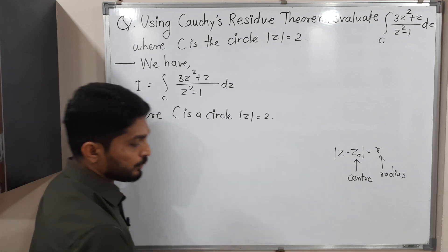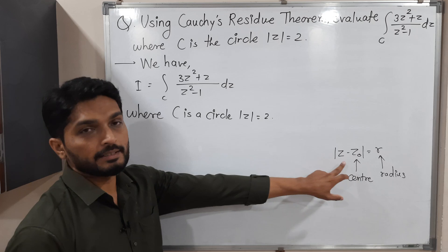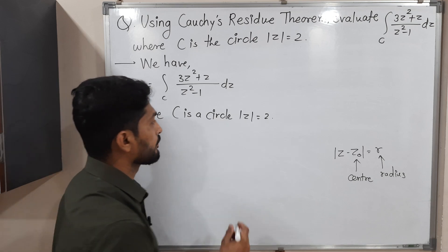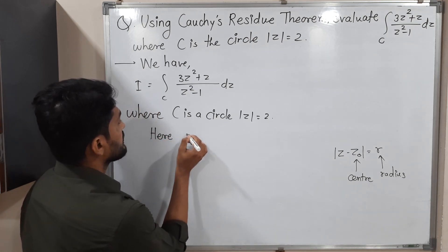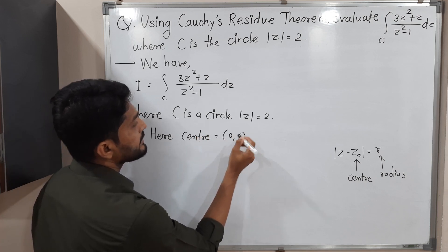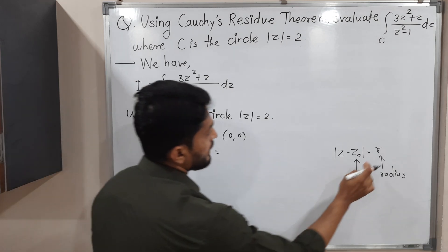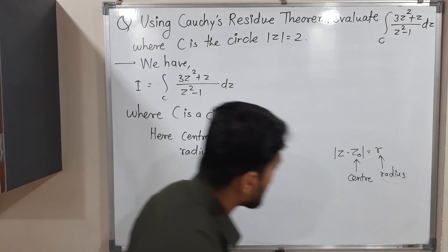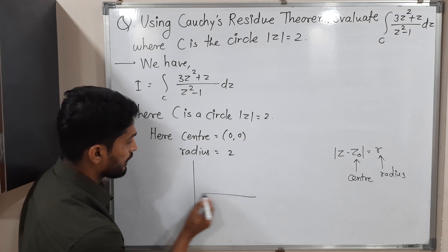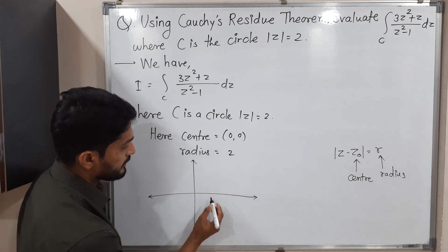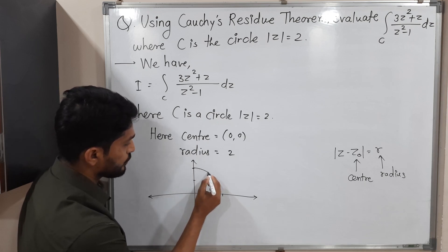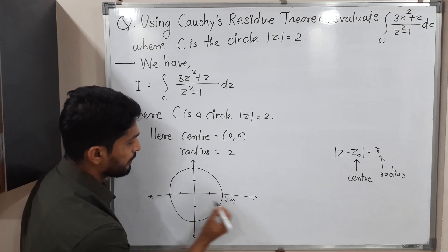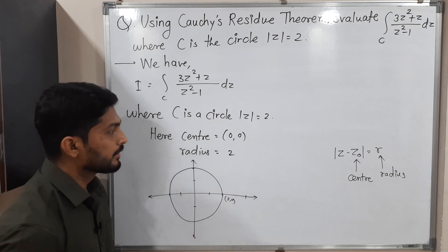So what will I do? I will compare this equation with that one. You can see there is no z minus anything here, so that means our z₀ is 0. Center z₀ is (0, 0). Radius, which is the right-hand side, is 2. So let me draw a circle with center (0,0) and radius 2. Here is the imaginary axis and real axis, with scaling 1, 2. The circle passes through (2,0), (-2,0), and so on.